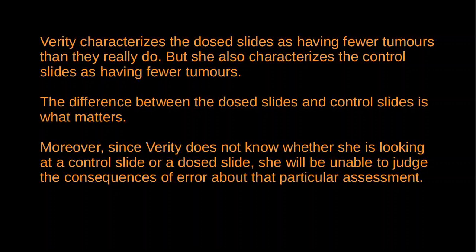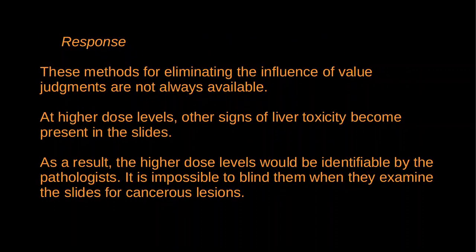One objection is that scientists can remove the need to appeal to social values by using the right methods — for instance, blinding pathologists when they classify rat liver slides. If a pathologist is concerned about over-regulation and thus averse to false positives, her assessments will result in more false negatives. But that doesn't really matter with respect to our conclusion about carcinogenic effects, provided the bias is evenly distributed among all groups of slides — the dosed slides will appear to have fewer tumors, but so will the control slides, so the difference between dosed and control will be roughly the same as the actual difference.